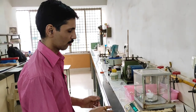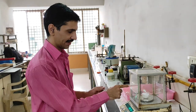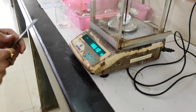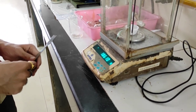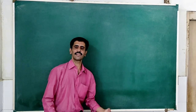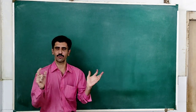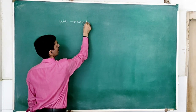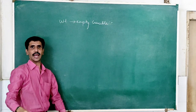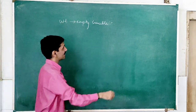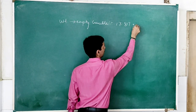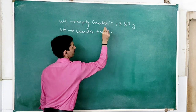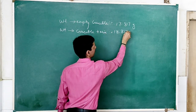Now we go for the final weighing. The crucible has been cooled through the asbestos sheet as well as the desiccator. You can see the crucible is now on the weighing balance and it is 18.610 grams — this is the weight after the entire process of heating and cooling. The weight of the empty crucible was 17.817 grams, and the weight of the crucible plus the mixture before heating was 18.817 grams.